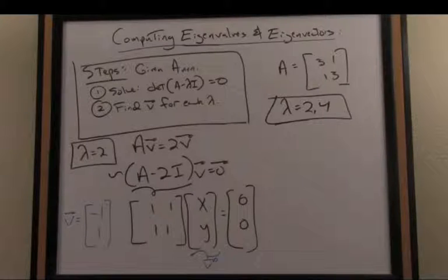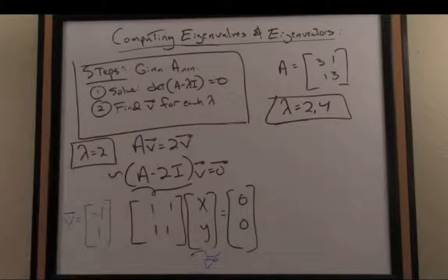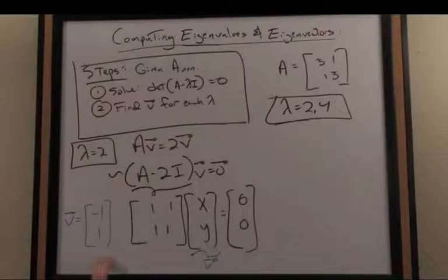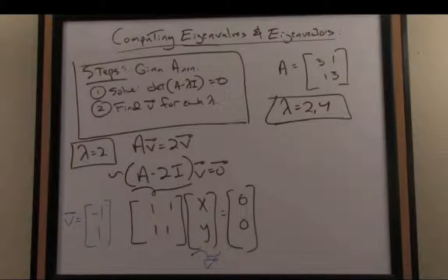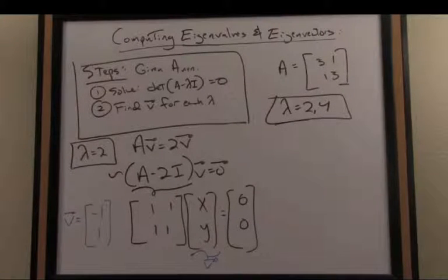So in summary, then, we would say for the eigenvalue 2 in this matrix, a corresponding eigenvector is negative 1, 1. It's also worth mentioning that actually, in fact, any non-zero scalar multiple of this eigenvector would be an adequate eigenvector representative. Just so happens that negative 1, 1 is one of these simpler versions of that particular eigenvector.